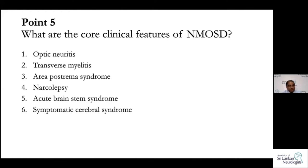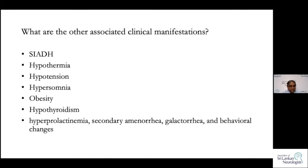About 25% of patients with MOG disease will satisfy NMOSD criteria. The core clinical features again include optic neuritis, myelitis, area postrema syndrome, brainstem syndrome, narcolepsy, and cerebral syndrome. There are also other associated features: SIADH, hypothermia, hypotension, and because of the brain regions where lesions occur — obesity, hypothyroidism, secondary amenorrhea, and galactorrhea. Some patients also have what are known as episodic tonic spasms in the lower limbs, which are very characteristic and trouble sleep.